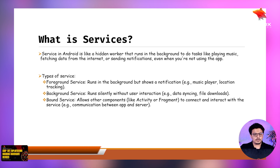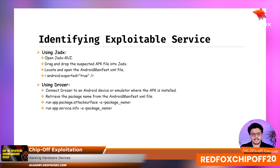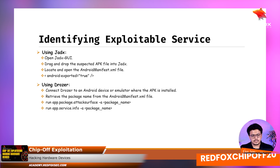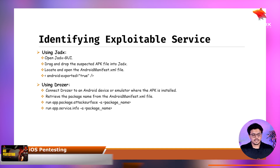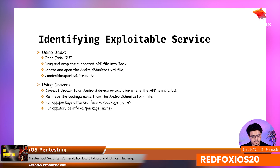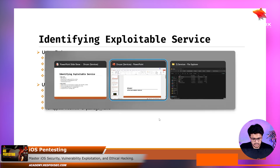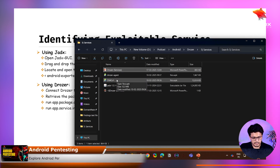So that was all about what services are in an Android application. Now, how can we identify if these services are exploitable? There are two methods: using jadx and using Drozer itself. Let me show you how we can check if services are exploitable via jadx. I'll go to this tab — this is my DVAC, a vulnerable application — and this is my jadx UI.